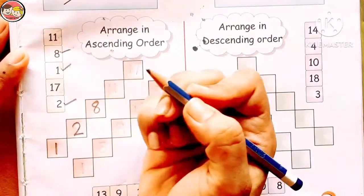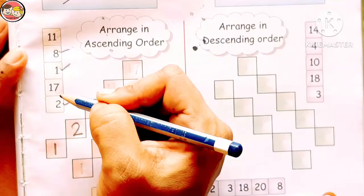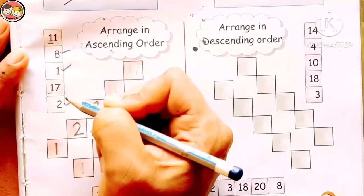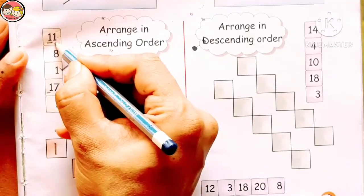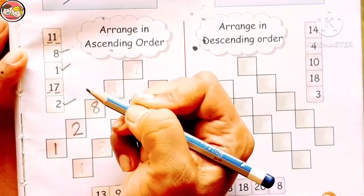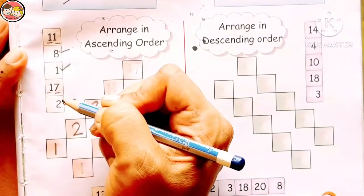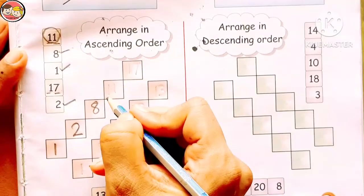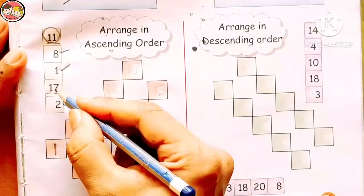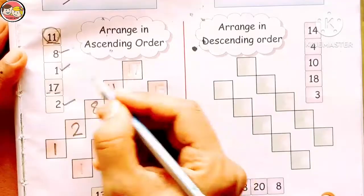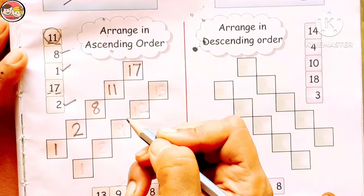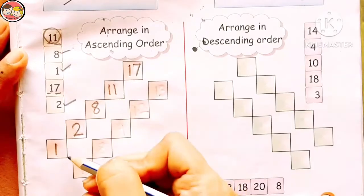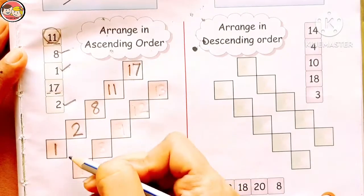Now number 11 and 17 are left — both are two-digit numbers. The leftmost digits of these numbers are the same: 1 and 1. So now we have to check the second digit. These are 1 and 7. Which is the smaller number? Yes, 1. So 11 is smaller than 17. Here we write 11, then 17. So children, look here: 1, 2, 8, 11, and 17. We have arranged these numbers in ascending order.